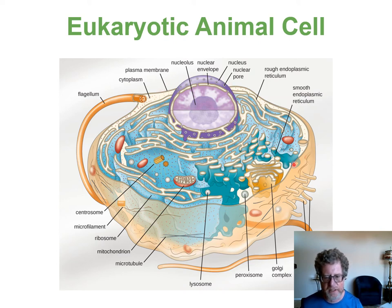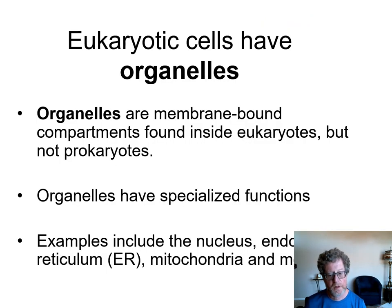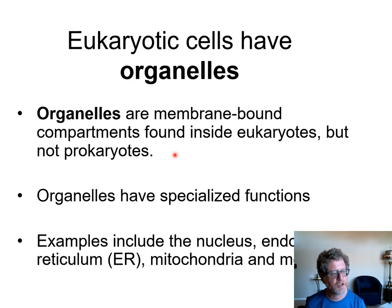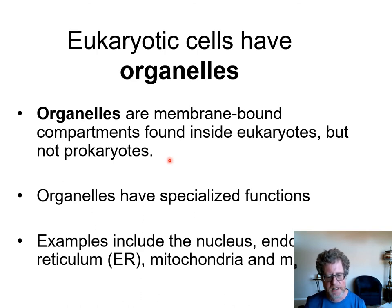One of the big differences between the domain Eukarya and the domains Bacteria and Archaea is that eukaryotic cells have organelles — membrane-bound compartments inside with specialized features. Just like a house has a kitchen for cooking, a bedroom for sleeping, and a den for studying, cells have compartments surrounded by membranes called organelles. Some of the names are nucleus, endoplasmic reticulum, and mitochondria, and we'll go through these organelles in today's lecture.